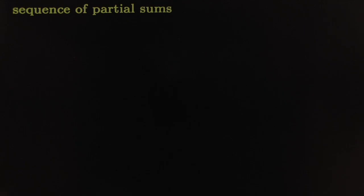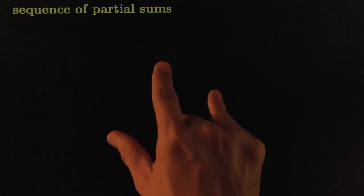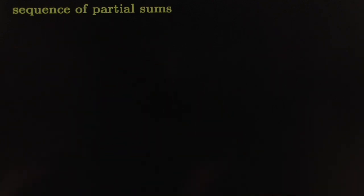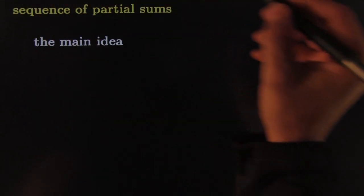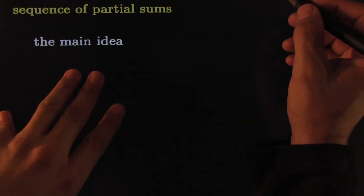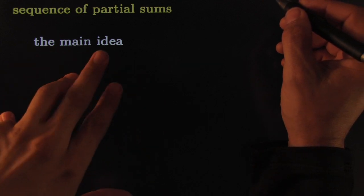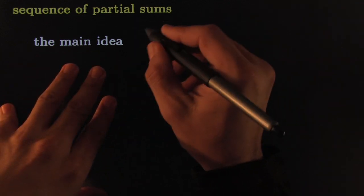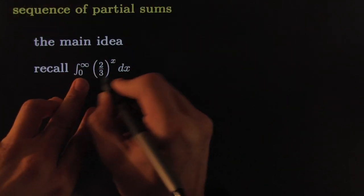Let's put it all together. Another one of the super famous terms we will encounter is 'sequence of partial sums.' To explain this, recall from previous chapters one of the most important ideas — the concept of improper integrals, which are intervals that are really really long.